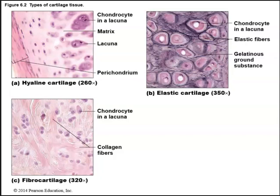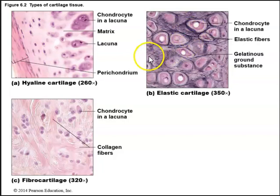In lab, we saw histological preparations of the different types of cartilage. Hyaline cartilage had a ground-glass appearance with chondrocytes visible in their lacunae. Elastic cartilage showed lovely elastic fibers between chondrocytes in their lacunae, and was very darkly stained. In fibrocartilage, the chondrocytes are arranged in rows with visible collagen fibers within the matrix.